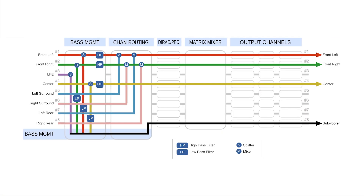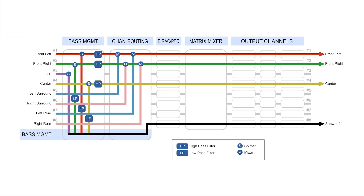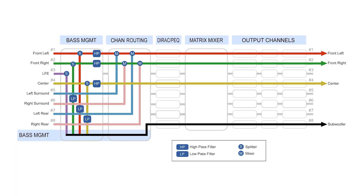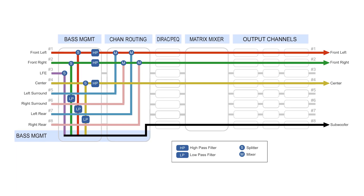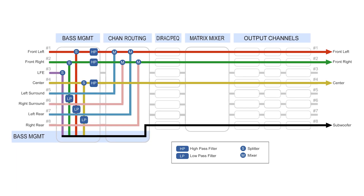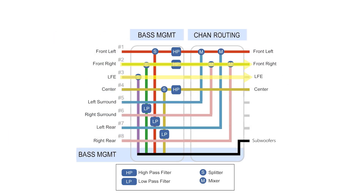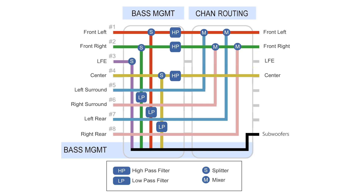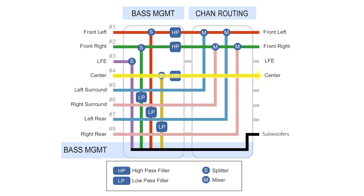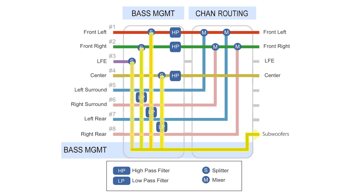The down conversion from 7.1 to 3.1 on the FlexHT is a matrix-based process, illustrated in the signal flow diagram. Front left and right channels receive their own signal. Surround and rear channels are mixed into the front channels. The center channel passes through. The subwoofer channel is composed of the low frequencies from the main left and right, LFE, and center channels, which are then routed to the subwoofer output.